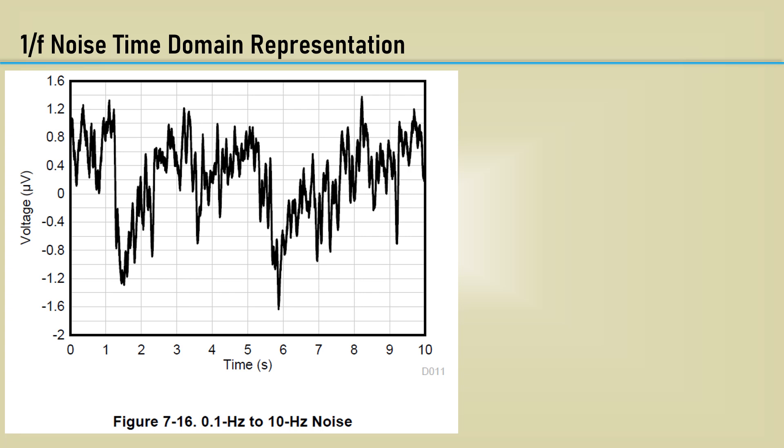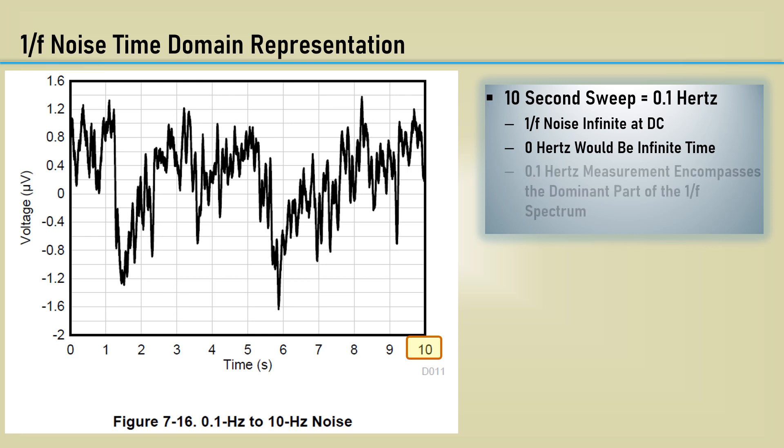Op-amp datasheets will sometimes have an oscilloscope waveform of the flicker noise. It's a 10-second sweep, which corresponds to a tenth of a hertz. In theory, 1 over F noise would be infinite at DC, but that would correspond to infinite time, which is a way for me to wrap my head around that concept and not worry about it. The 0.1 hertz measurement encompasses the dominant part of the 1 over F spectrum.